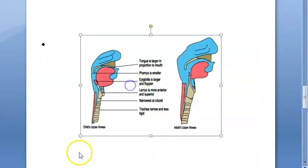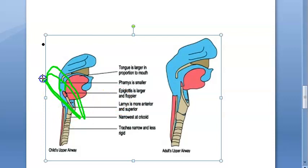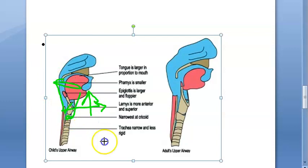Looking at the other diagrams: the tongue is larger in the child, the pharynx is smaller in the child, the epiglottis is large and floppier — that's why laryngomalacia occurs. The larynx is more anterior and superior. The narrowest point is at the cricoid — remember, funnel-shaped. The trachea is narrow and less rigid in the child, while in the adult the trachea will be a little wider and stronger.